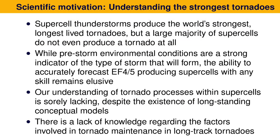The scientific motivation for my work is that supercell thunderstorms—the ones with rotating updrafts called mesocyclones—typically form in abundance in the Great Plains of the United States in the spring months, where you might see people chasing tornadoes in Oklahoma and Kansas. They produce the majority of the world's tornadoes, and more importantly, the majority of very strong tornadoes—those ranked EF4 or EF5 on the Enhanced Fujita scale—like the Joplin EF5 tornado that destroyed much of the town and killed many people, and El Reno, Oklahoma, including one that killed prominent storm chaser Tim Samaras in 2013.